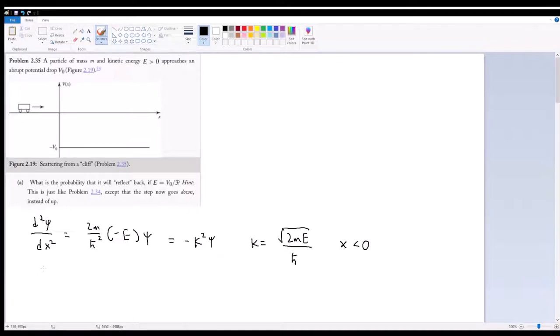On the right side, we have d²ψ/dx² is equal to 2m over ℏ² times negative V0 minus E times ψ. And this is going to equal, let's see, so V0 is negative, right?